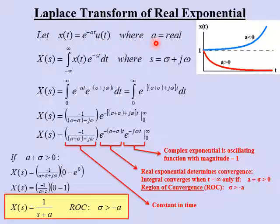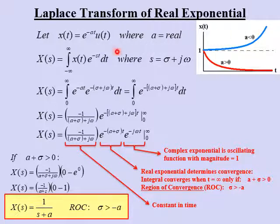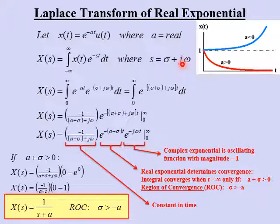The function we want to take the Laplace Transform of is x of t equals e to the minus at times the step function u of t, where a is a real number. A can be either greater than or less than zero. Because of the minus sign in front of a, if a is greater than zero, then x of t is a decaying exponential — like the red line shown. If a is less than zero, x of t is an increasing exponential. The Laplace Transform will work with either case. We substitute x of t into the definition of the Laplace Transform, replacing s with sigma plus j omega, because we'll need this when finding the region of convergence.